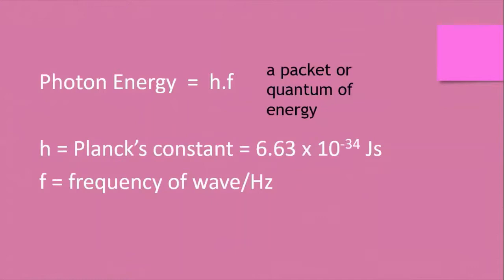Photon energy is defined as H times F, where H is Planck's constant and F is the frequency of the associated wave. Think about a packet, a quantum of energy.